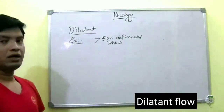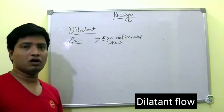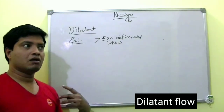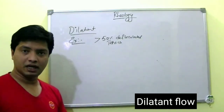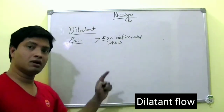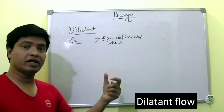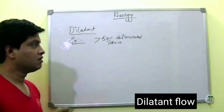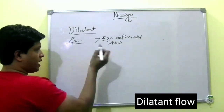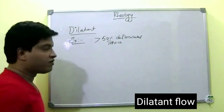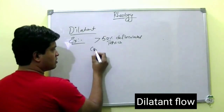An example of this system is a more than 50% deflocculated system, which means the vehicle is very less compared to the particles — particles are more and vehicle is less. The best example for this is cornstarch in water.